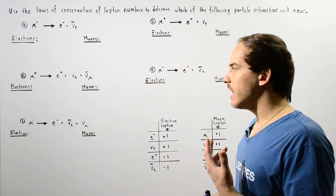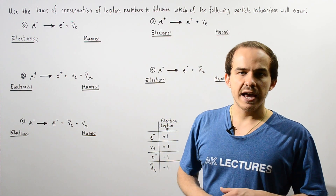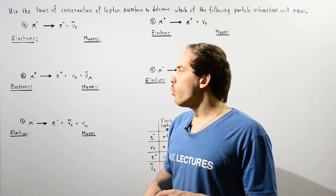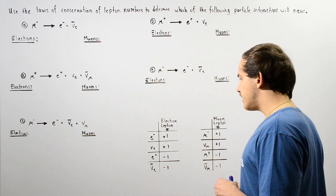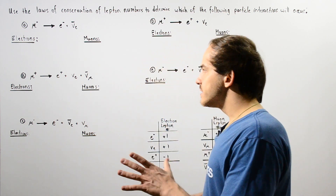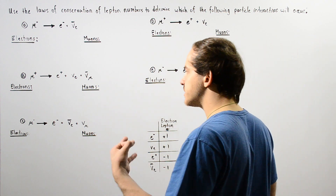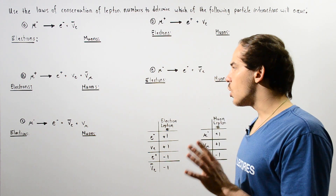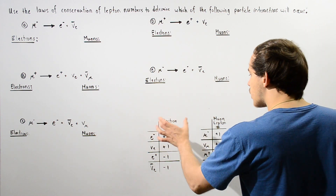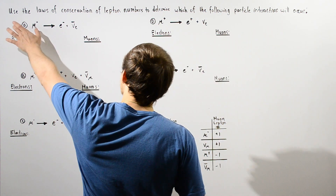Let's take a look at the following example that deals with using the laws of conservation for lepton numbers to determine which one of these five particle interactions will actually take place in nature. Since these five reactions don't contain the tau lepton or the tau anti-lepton, we don't have to worry about tau lepton number conservation. We're only going to concern ourselves with electron lepton numbers and muon lepton numbers. Let's begin with reaction A.